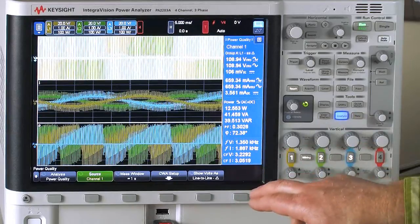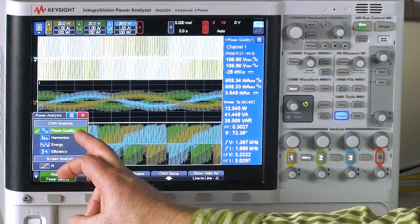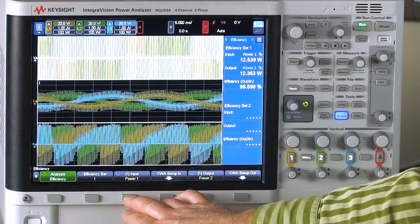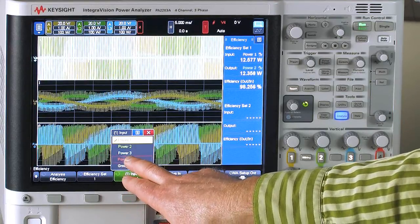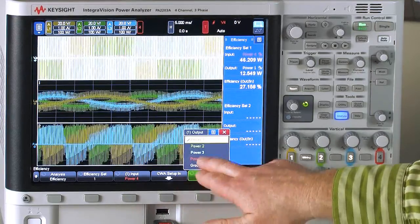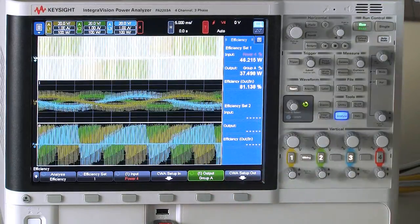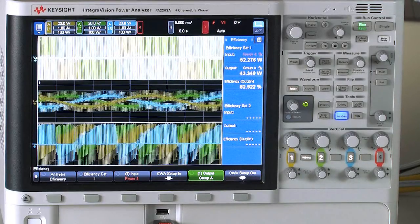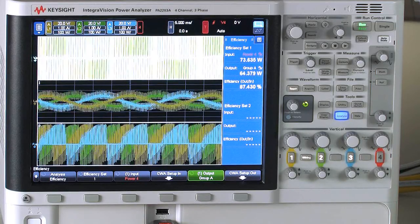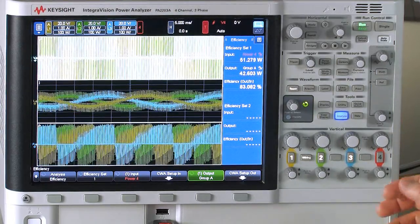There's other analysis features that we can actually do here. Right now it's looking at power quality. We can also look at the efficiency of the VFD from the input to the output. And so I can define my input power as power number four because that's my line in and my output power as the grouped three phase power. And I can see the actual efficiency that this is running at. I can vary the speed of this thing. It runs at 80% efficiency at slow speeds. And as I increase the speed, the efficiency of this thing goes up. So it's just one of the measures that you can make is looking at efficiency input to output on a VFD.